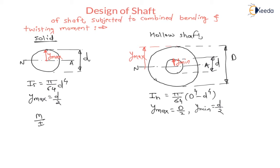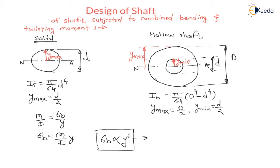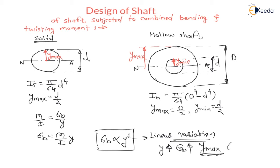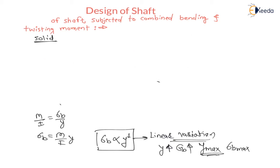From the bending equation M/I = σB/Y, we get σB = (M/I)·Y. Therefore bending stress is directly proportional to Y — this is called linear variation. As Y increases, bending stress also increases. We will draw bending stress distribution for solid as well as hollow shaft.